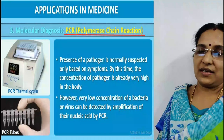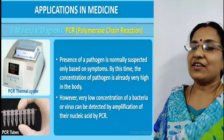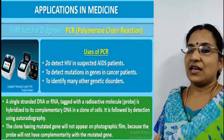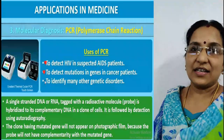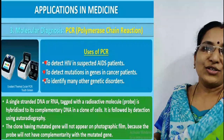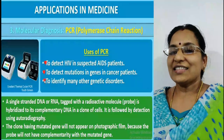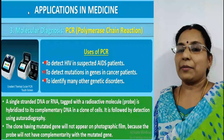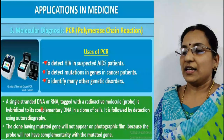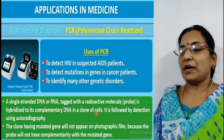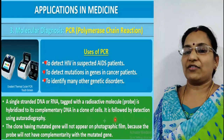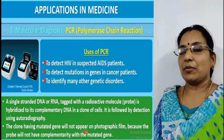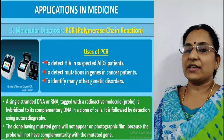Uses of PCR include: detecting HIV in suspected AIDS patients, detecting mutations in genes in cancer patients, identifying many other genetic disorders, and detecting coronavirus. A single-stranded DNA or RNA tagged with a radioactive molecule is hybridized to its complementary DNA in a clone of cells, followed by detection using autoradiography. A clone having a mutated gene will not appear on the photographic film because the probe will not have complementarity with the mutated gene.